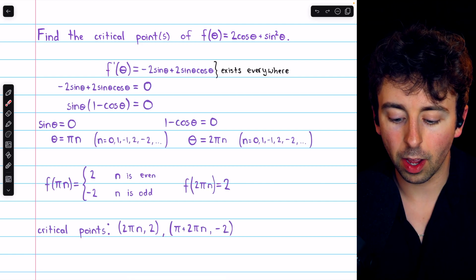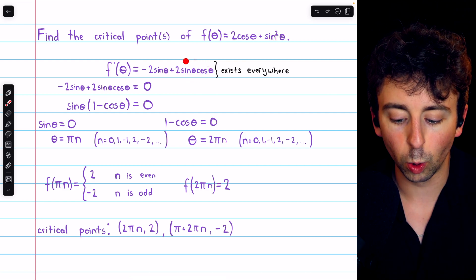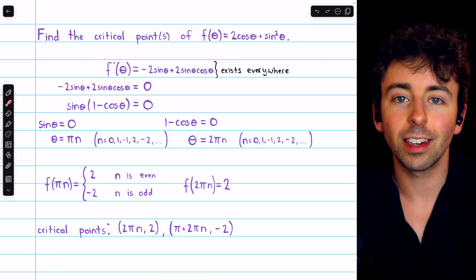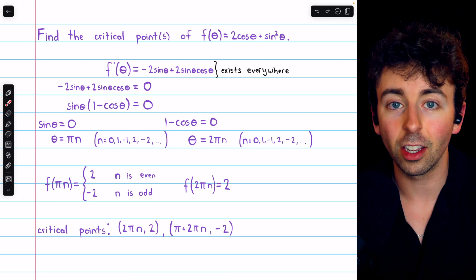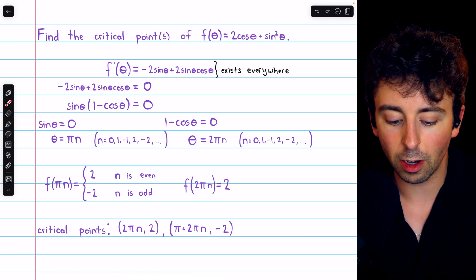I'll put the solution on screen now. Here's the derivative, f'(θ). To take the derivative of sin², of course, we use the chain rule. That's where that comes from, and hopefully you know that this would exist everywhere. It's just sines and cosines. Hence, the only critical points will occur where this derivative is equal to 0.